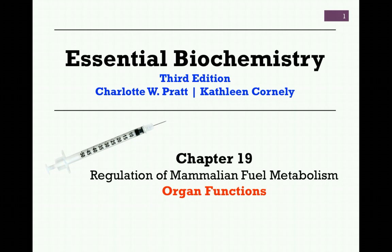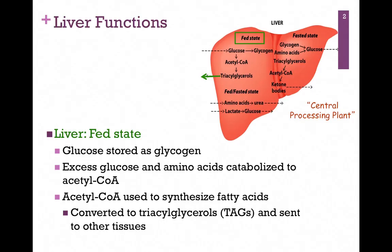In our next lesson on the regulation of mammalian fuel metabolism from Chapter 19, we want to look at the function of certain organs in terms of the metabolic pathways that operate under different conditions. Let's look first at our central processing plant, the liver. We'll examine it first in the fed state.